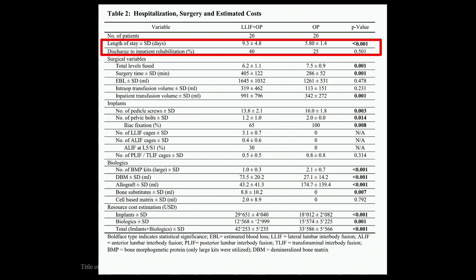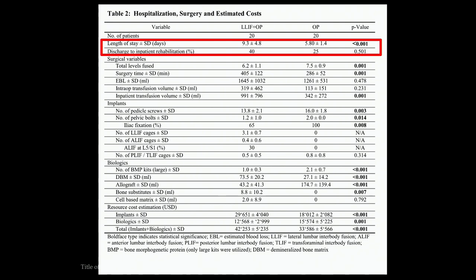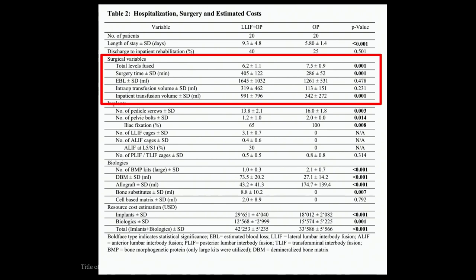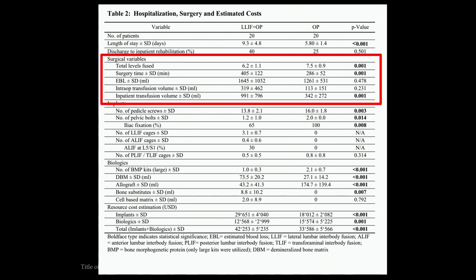When we looked at open posterior with lateral interbody approach, the average length of stay was almost 10 days. The all-open posterior at the time was about 5.8 days. Also, 40% had gone to rehab versus 25%, which is an added cost. For surgical variables, the all-open posterior approach fused a little more but had about 120 minutes less surgical time and less transfusion volume — about a third less transfusing compared to the combined approach.